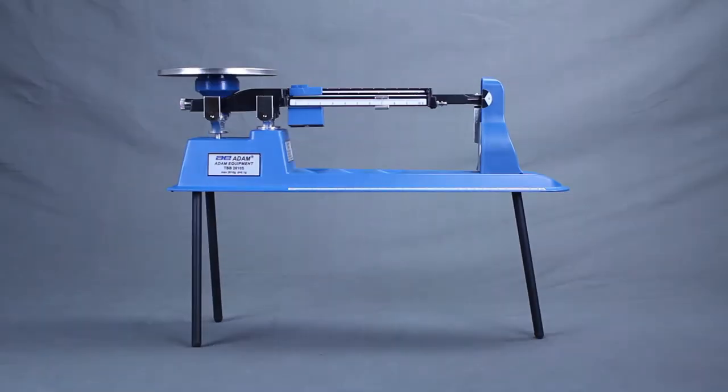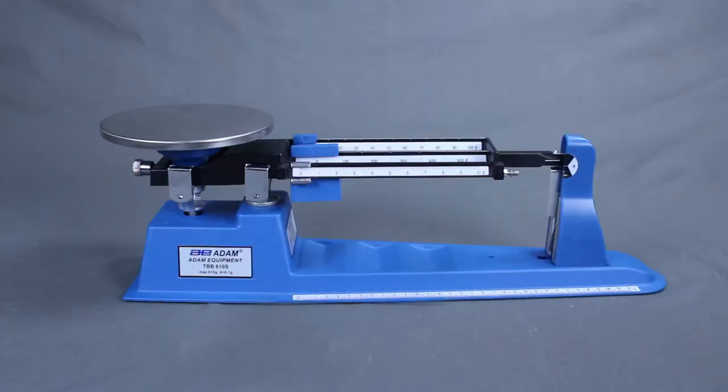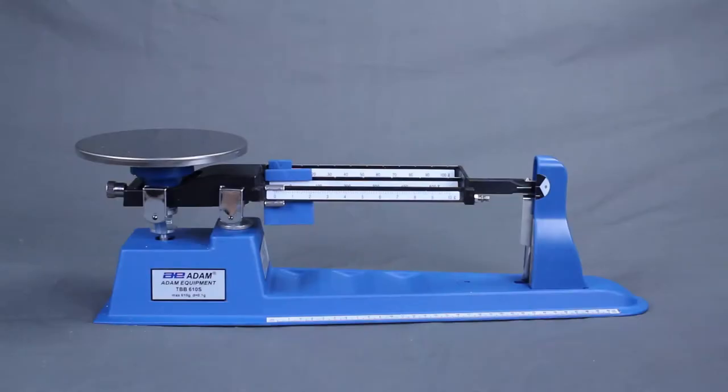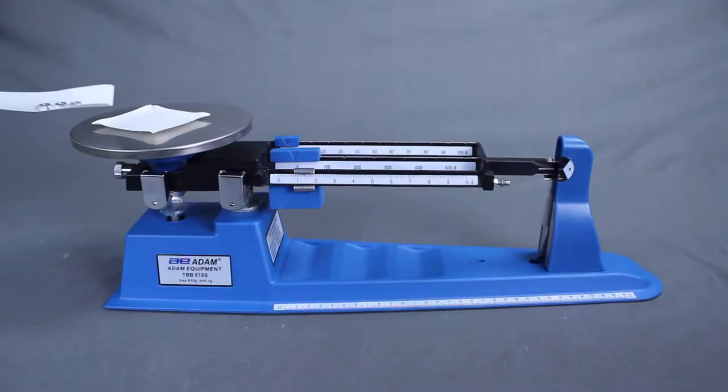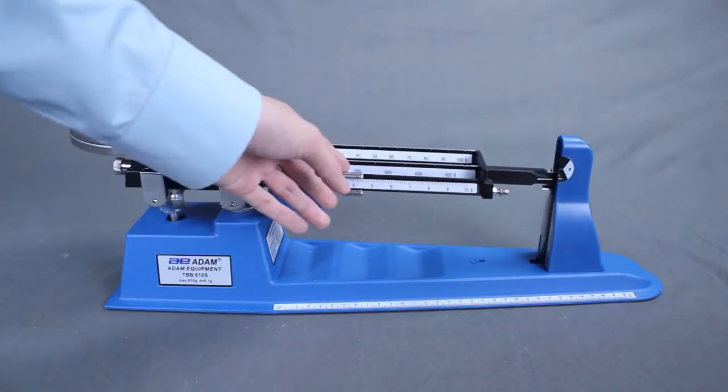Adam triple beam balances are available in different configurations. The basic TBB 610S model measures weights up to 610 grams.